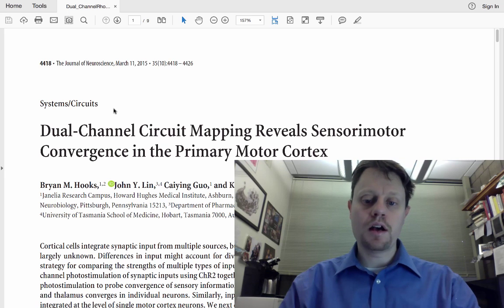The example paper that I want to talk about today is this one that involves mapping circuits and how two different inputs converge or both arrive onto primary motor cortex in the brain.